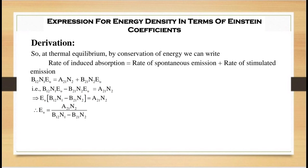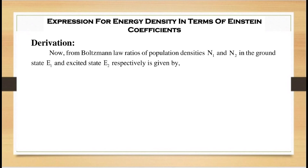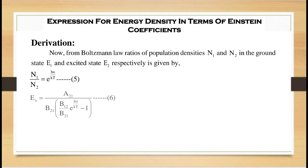Rearranging, we get E_μ = A21·N2 / (B12·N1 − B21·N2). Taking B21·N2 as common from the denominator: E_μ = (A21/B21) / (B12·N1/(B21·N2) − 1). From Boltzmann's law, the ratio of population densities N1 and N2 in the ground state E1 and excited state E2 is N1/N2 = e^(hν/kT). Substituting this into the equation gives E_μ = (A21/B21) / (B12/B21·e^(hν/kT) − 1).